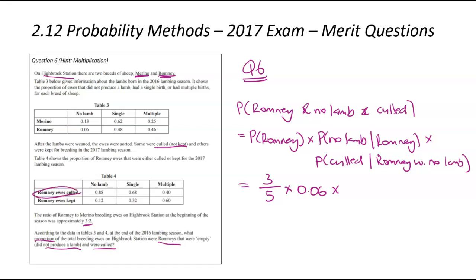So 0.06 is the probability. So that there is the Romney not having a lamb. And then finally, what was the probability they were culled if they were a Romney without lamb? And you can kind of see, there's the Romney ewes that were culled. Well, there's them not having a lamb. And there was 0.88. So it looks like they got rid of most of the Romney ewes that didn't have a lamb. We've got the three numbers. We can now multiply them together. That gets me to 0.0317. And that there had a 4dp rounding.